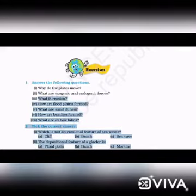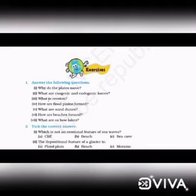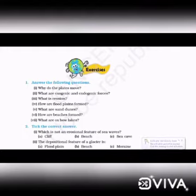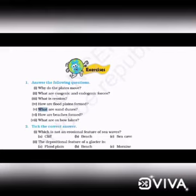Third question: which is caused by sudden movement of the earth? It is an earthquake. Fourth question: mushroom rocks are found in the desert. Fifth question: oxbow lakes are found in river valleys.